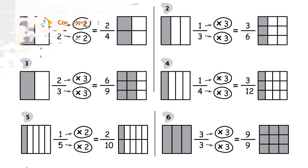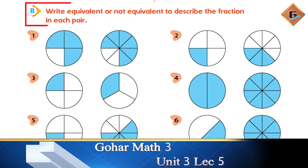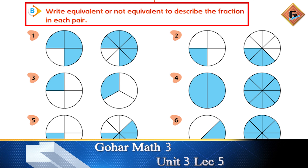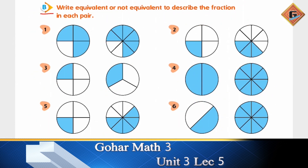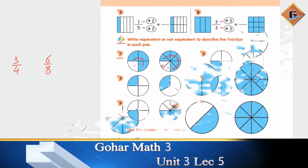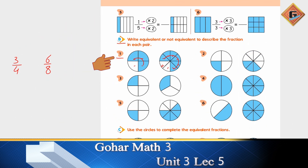Move to the next page, page number 72. Part B says: write equivalent or not equivalent to describe the fraction in each pair. Look at the shapes in front of you. For the first pair, the first shape has 4 parts total with 2 colored, giving 2/4. The second shape has 8 parts total, and 6 are colored, giving 6/8.